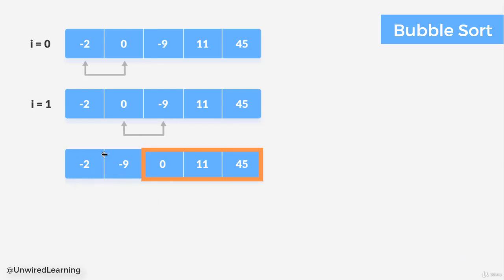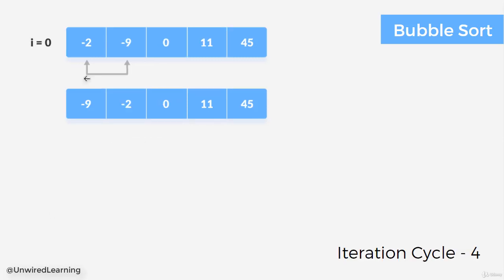So that means we have only two elements remaining. In our next iteration cycle we will be comparing these two. So index 0 with index 1. And here you can see minus 2 is greater than minus 9, so we need to swap again. So this is our final sorted list.